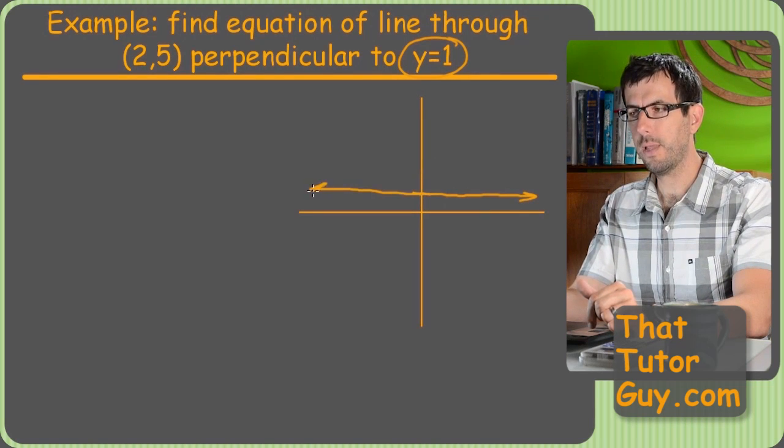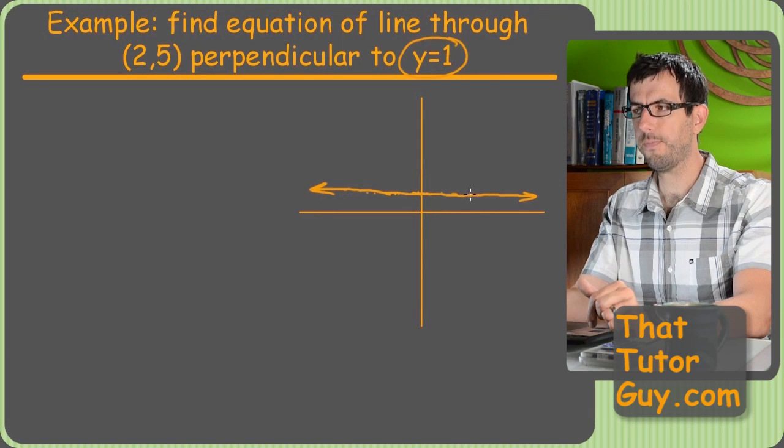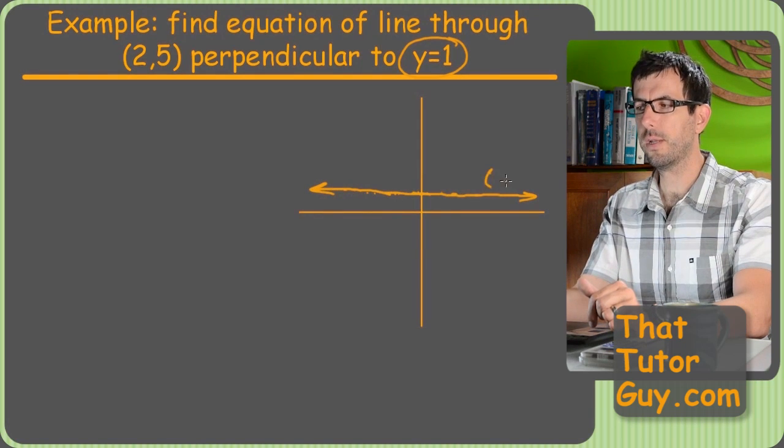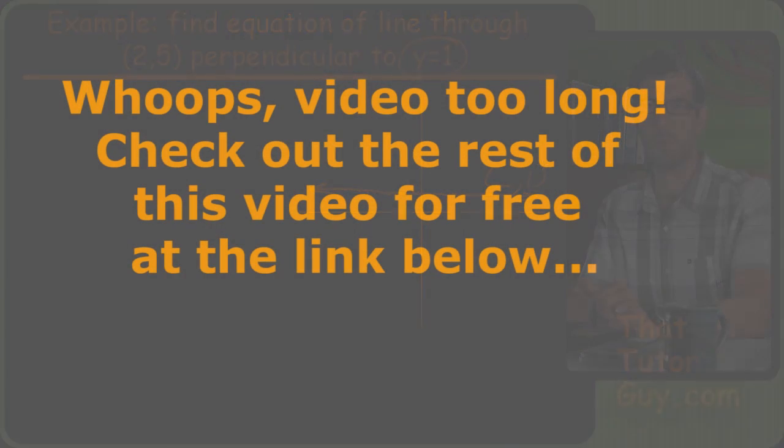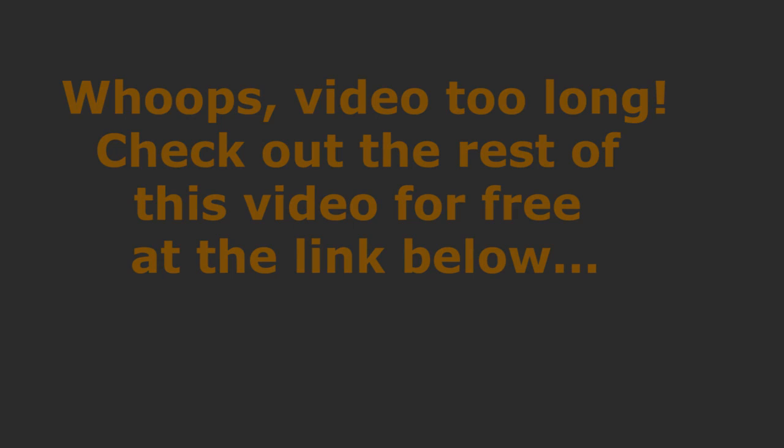It's a line where every single point along the line, because remember a line is just a collection of infinity points all right next to each other. Every one of those is going to have a coordinate of something, comma, one. So, that's why y equals one is the horizontal line.